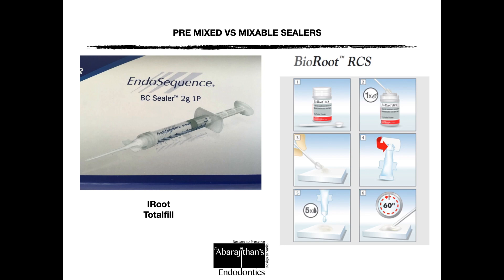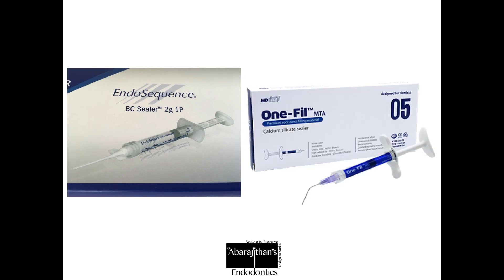When it comes to bioceramic sealers, there are two different types. The first is the pre-mixed injectable form - some of the most popular being Endo Sequence, iRoot, and Total Fill, which are essentially the same formulation marketed under different trade names in Europe and the US. The other class is the BioRoot RCS from Septodont, which is a powder-liquid form. Both have equally good properties, with injectable sealers having a slight edge due to easier, more consistent filling of intricacies, and a slightly more pronounced and longer-lasting antibacterial effect.